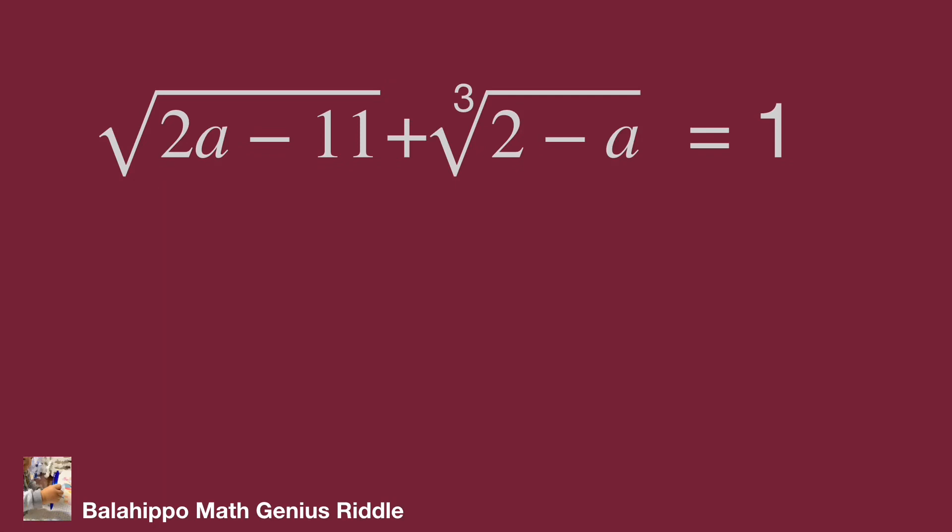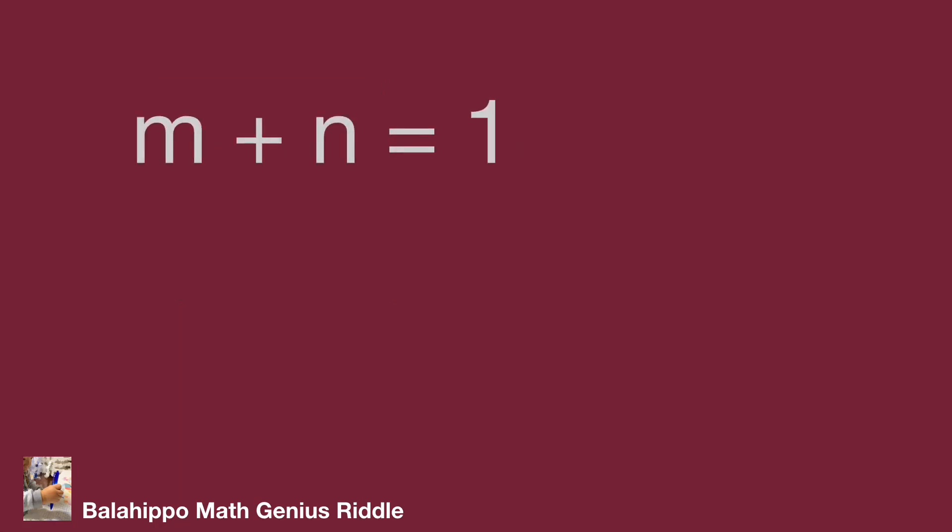To make it easy, two operations: let square root of 2a minus 11 equal to m and cube root of 2 minus a equal to n. So the given equation can be revised as m plus n equals 1.